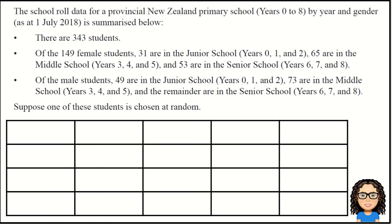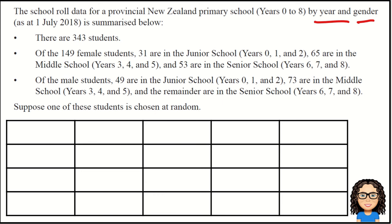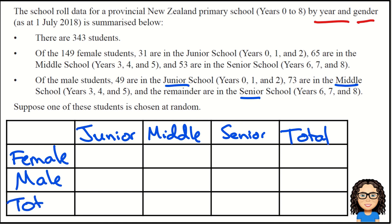The question talks about data from a school classified by year and by gender. So those are the two variables we need to build in either a tree diagram, a table, or Venn diagram. I'm going to do a tree diagram because that's my personal preference for this particular question. So I've got gender — female and male — and then across the other variable I've got junior, middle, and senior school. Then I need to add a total column and a total row at the end.